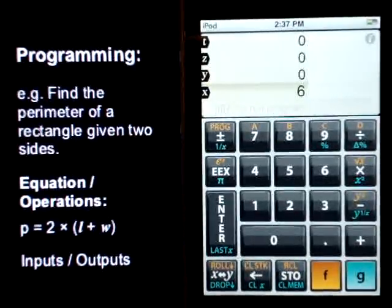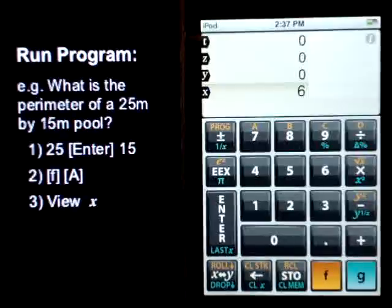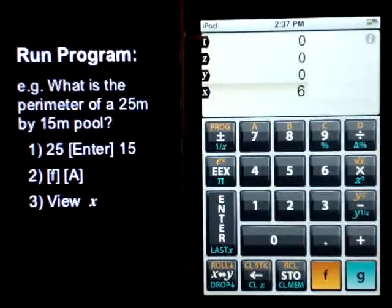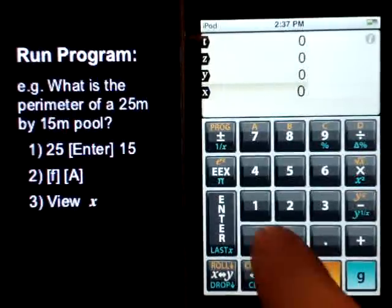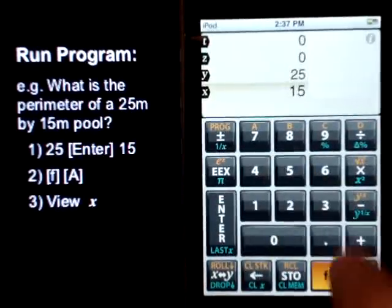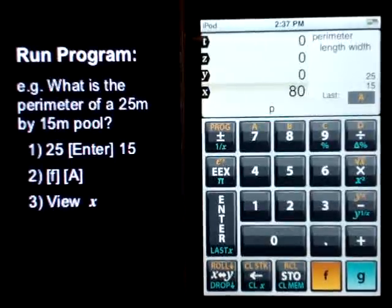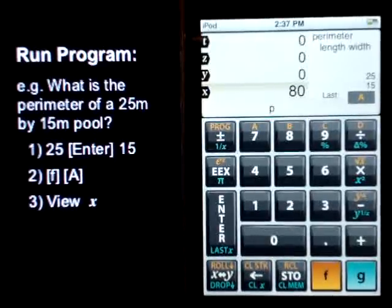Let's go to an example to run the program. What is the perimeter of a 25 meter by 15 meter pool? So, we'll put in 25. Enter. 15. We're ready to run. F, A. So, the perimeter is 80 meters.